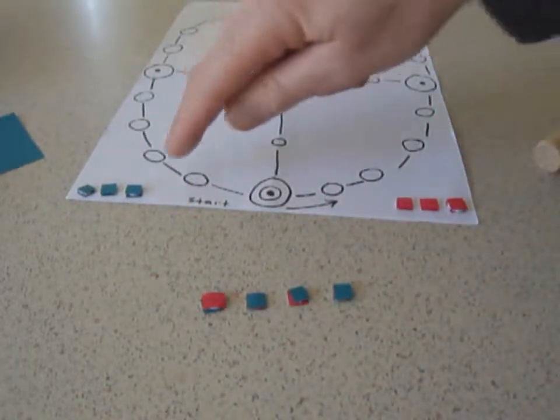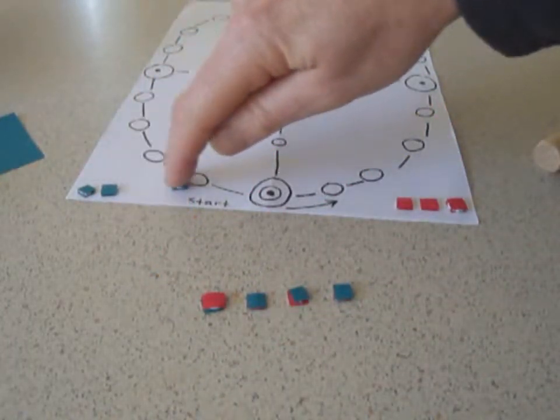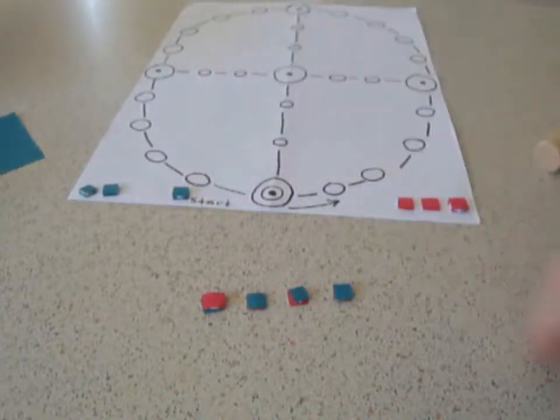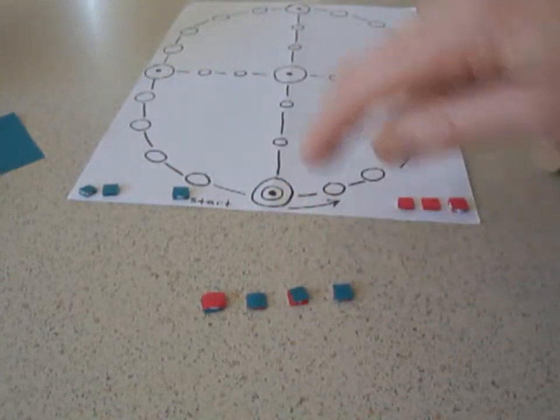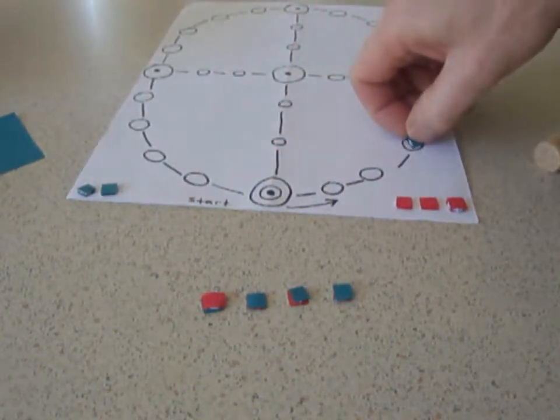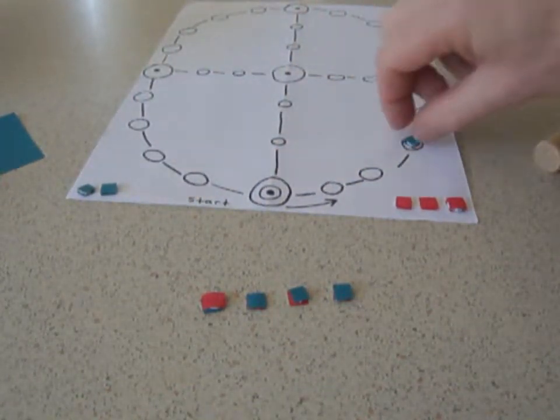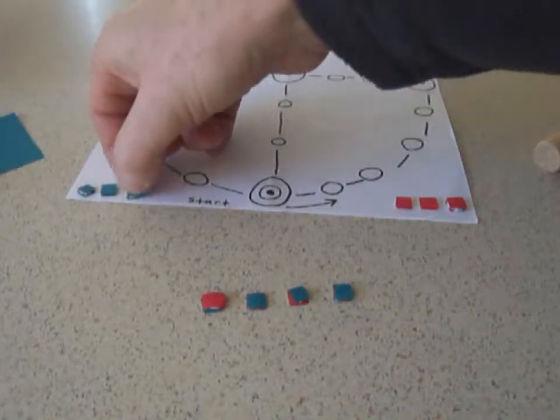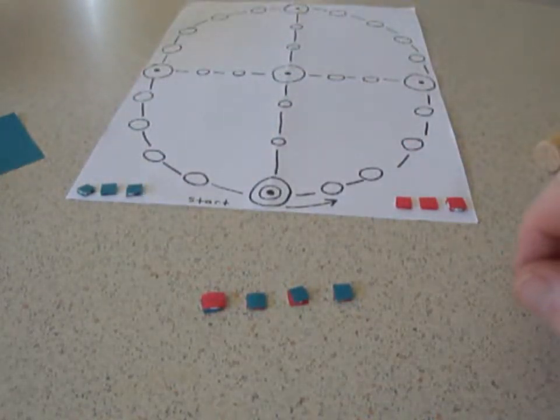If it was blue's turn, they would be allowed to move one piece one, two, three spaces. One, two, three, like so along the board. We'll explain how the movement on the board works soon. We just want to get a hang of the dice at the moment.